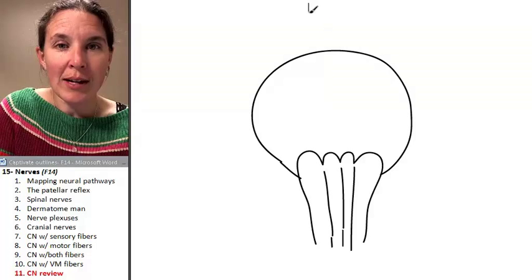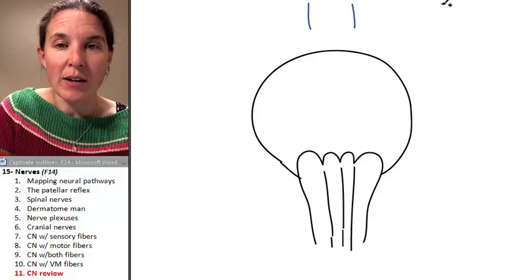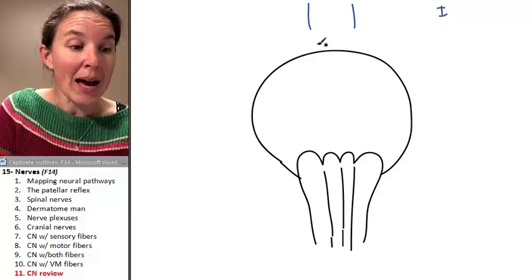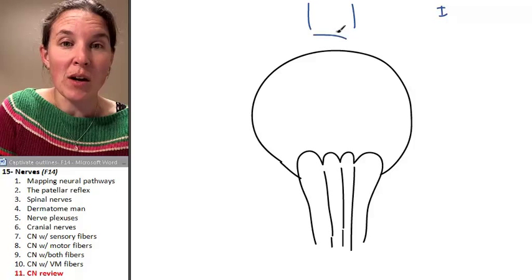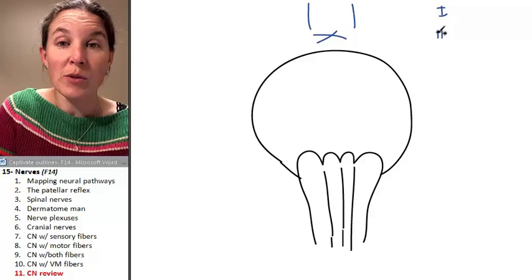Remember our little antenna out here in front. That was cranial nerve number one. Remember we had a nice little X going on. That's cranial nerve number two.